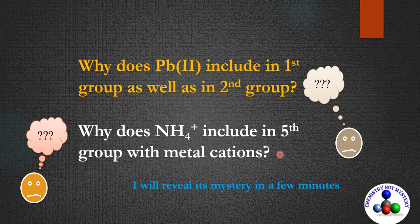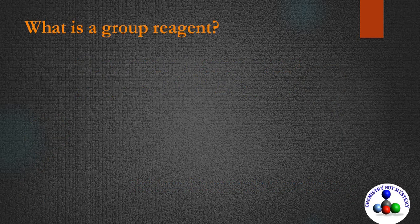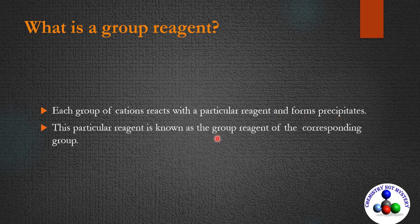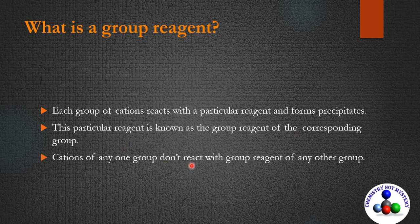I will reveal that mystery in a few minutes, but first you need to learn a few concepts. Each group of cations reacts with a particular reagent and forms precipitates — this particular reagent is known as the group reagent for the corresponding group. Cations of any group do not react with the group reagent of any other group.